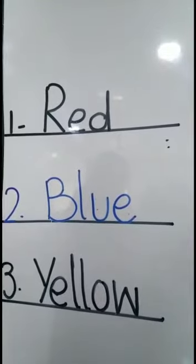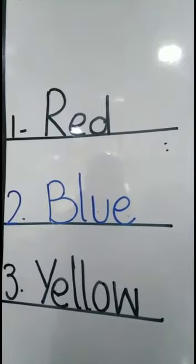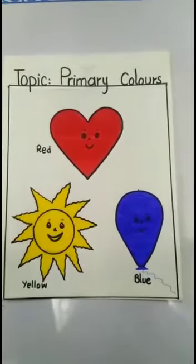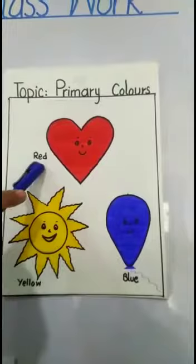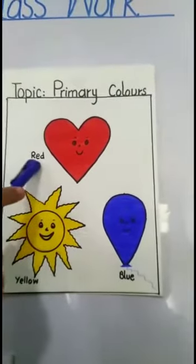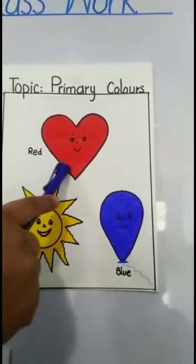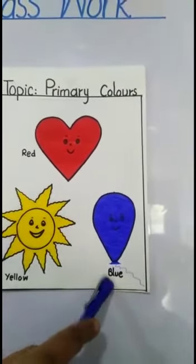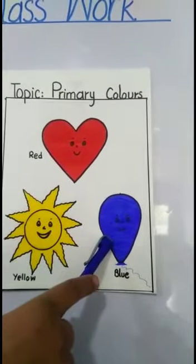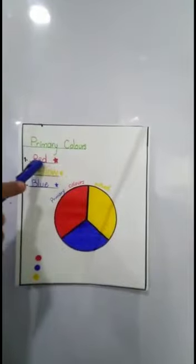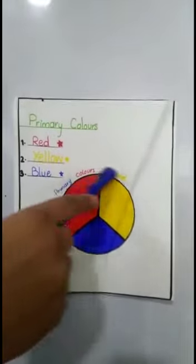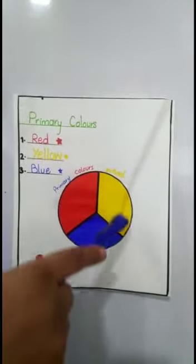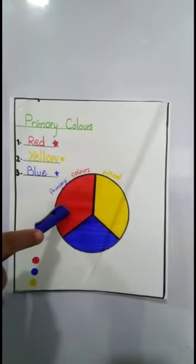These are basic colors. They can't be made from other colors. Students, look at this. This is a primary color worksheet: red heart, yellow sun, blue balloon. Look at this—primary colors red, yellow, blue. And this is a primary color wheel.